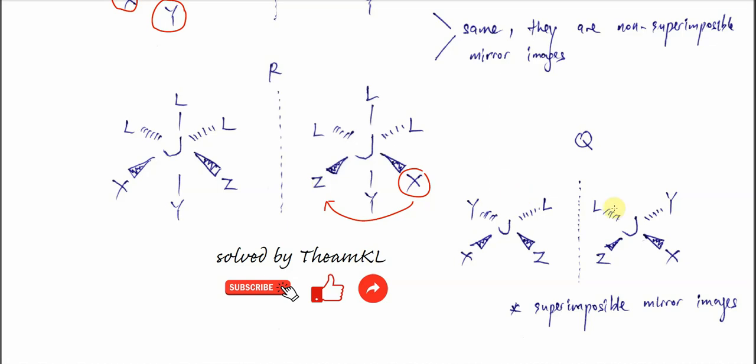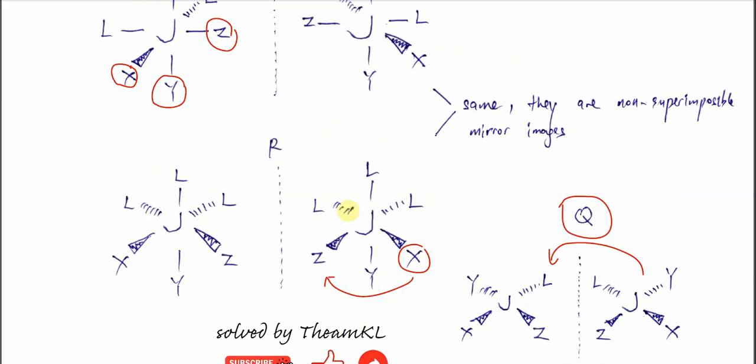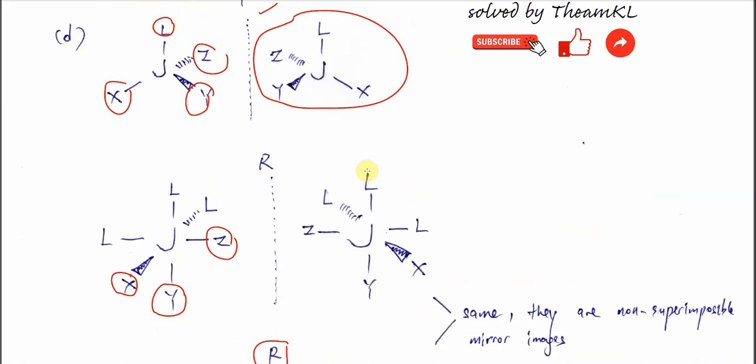Now, this is why Q cannot form optical isomerism. If three ligands L are substituted by X, Y, Z, it will form this complex ion, still square planar. Now if there is a mirror image, if you flip you get back the same thing. So they are superimposable, so they are not optical isomers. The answer is only R and P.